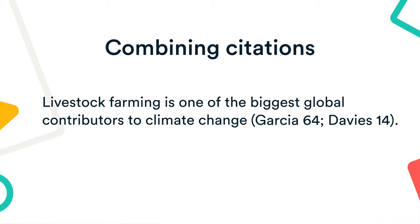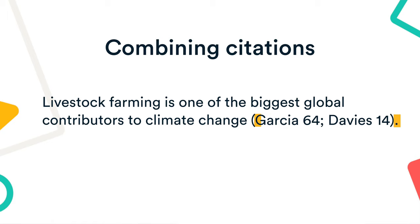If a sentence is supported by more than one source, you can combine the citations in a single set of parentheses. Separate the two sources with a semicolon.